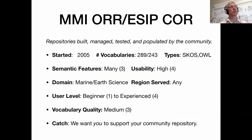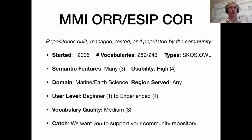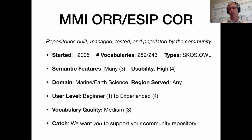Moving on to this other resource — whereas BioPortal is sort of the gorilla in the room that can deal with a lot of different things and provide lots of different automated features, the ontology recommender is particularly strong. I'd argue it's probably the best in its class. And mappings — automated and manual mappings and so forth. But the MMI Ontology Registry and Repository, which was developed about 12 to 13 years ago, was developed for the marine science community.